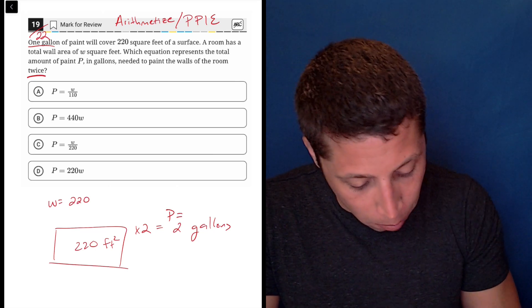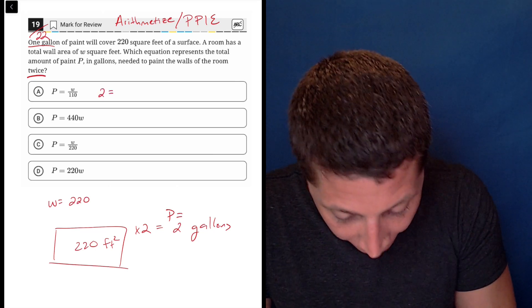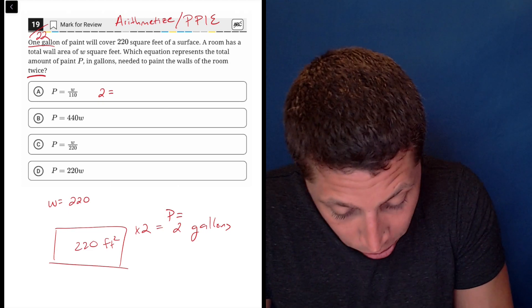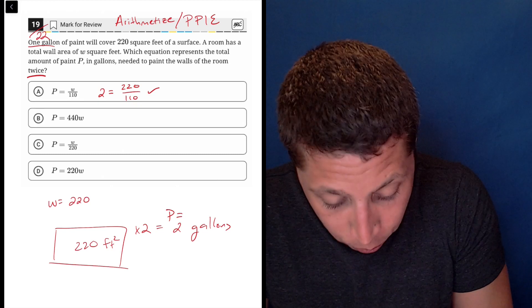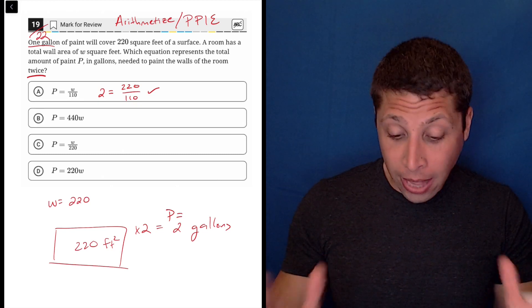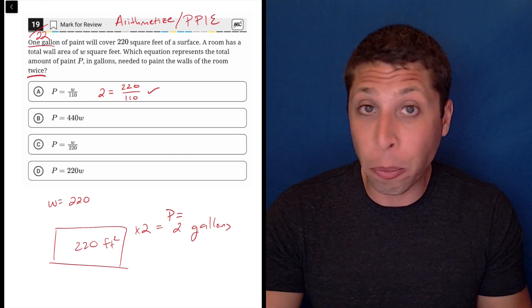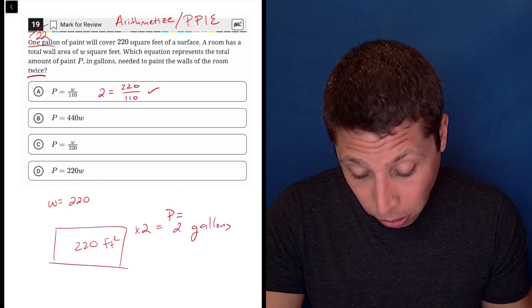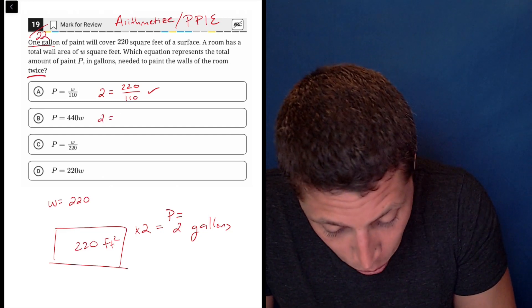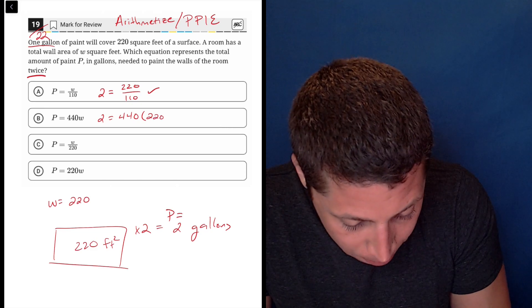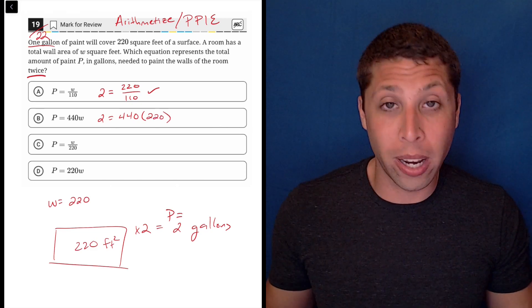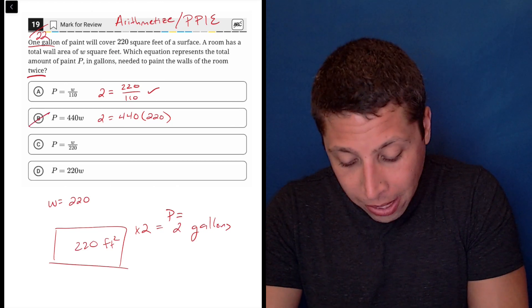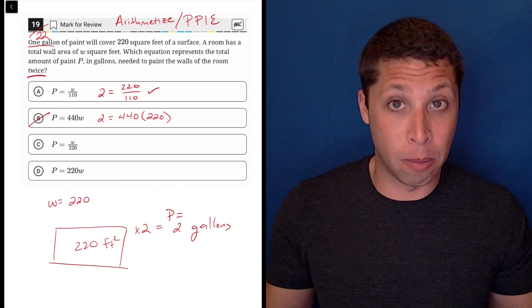So in choice A, we would plug in two for P and 220 for W. So two is equal to 220 over 110. Well, that's true. Now that doesn't mean that that's the answer. We have to double check. Maybe multiple equations are going to work here, so we got to be careful. But let's see, two is equal to 440 times 220. Well, I don't even need the calculator. I know that 440 times 220 is huge. So this doesn't make any sense. This equation is broken.